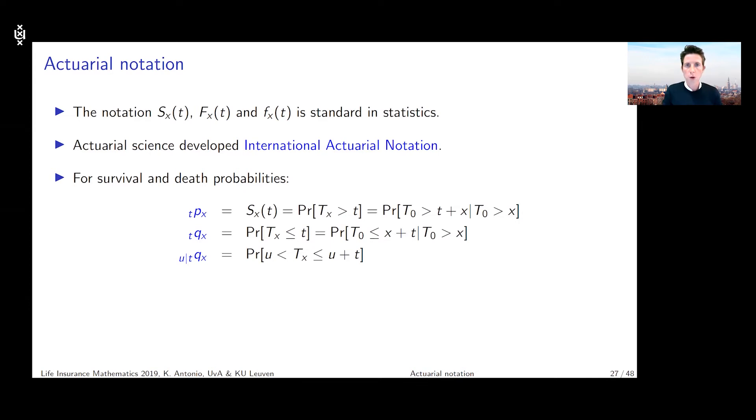I want to assess the probability that x is going to survive another u years and will reach age x plus u. And then I know what's the probability that in t years after reaching age x plus u, my policyholder will die.